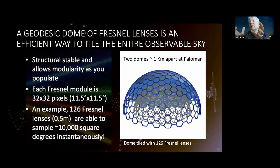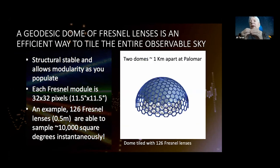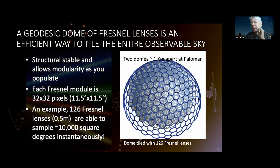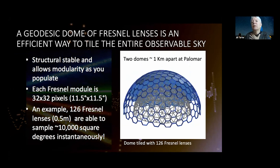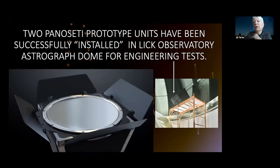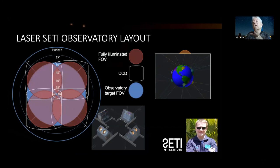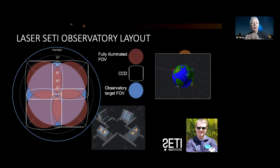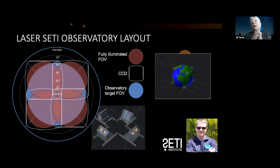There's the idea of building a geodesic dome with these lenses focusing a large piece of the sky onto photodiodes, able to look at a large area of the sky at the same time. The first two elements that would go into a geodesic dome have been installed at Lick Observatory where engineering testing is going on. Another idea is an inexpensive system based on cameras being worked on by Elliot Gillum at the SETI Institute, looking at all the sky above the horizon for fast monochromatic pulses.